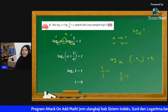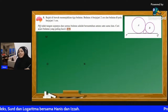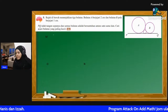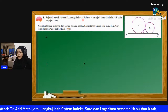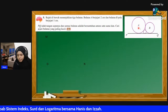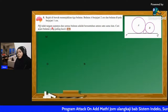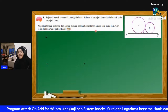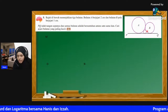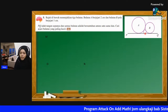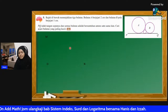Kita pergi kepada soalan yang kelima. Soalan ni agak sukar, jadi saya akan kurangkan speed saya bercakap. Kita baca soalan: Rajah di bawah menunjukkan tiga bulatan. Bulatan A berjejari 2 sentimeter, bulatan B berjejari 1 sentimeter. PQ ialah tangen sepunya dan semua bulatan adalah bersentuhan antara satu sama lain. Cari jari-jari bulatan yang paling kecil. Macam mana kita nak cari ni? Sebabkan soalan ni macam susah sikit, saya akan slowkan speed saya - anda kena fokus.